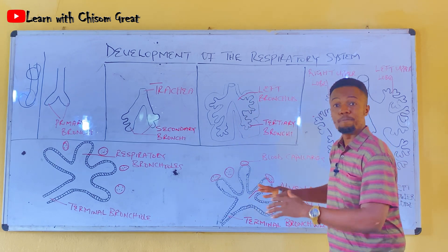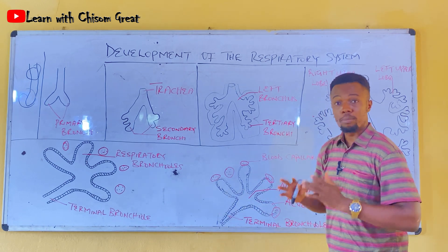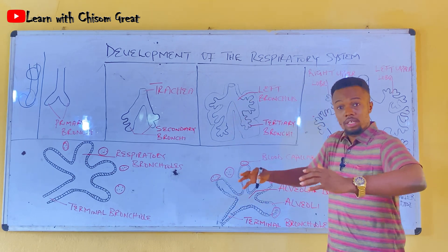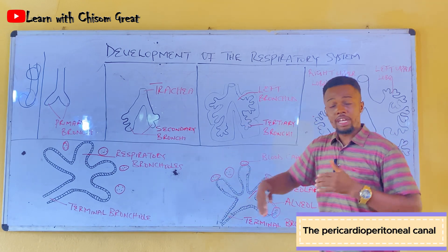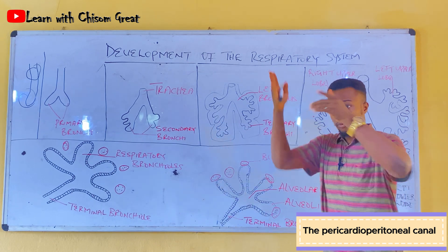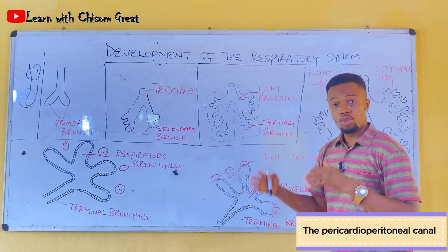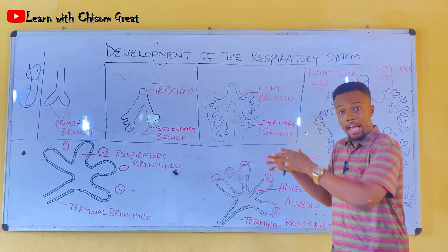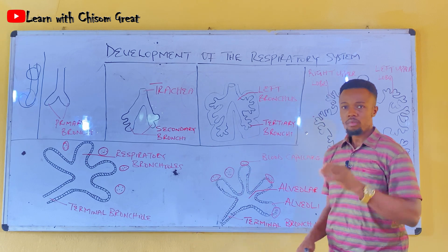The tertiary bronchi have been formed, and we've seen that they can also be called segmental bronchi. As this is happening, the lungs are expanding and growing into the pericardioperitoneal canal — the canal that surrounds the foregut. The pericardioperitoneal canal, which is where the lungs lie, keeps expanding to accommodate the expanding lungs.